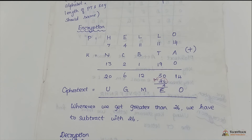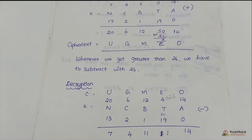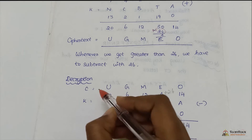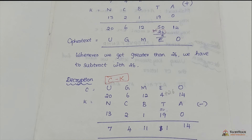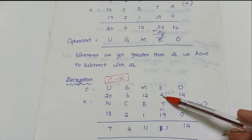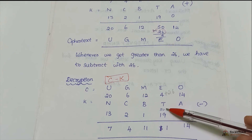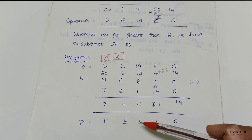For the decryption technique, the formula is: plain text = cipher text minus key. Where the result goes below zero, we add 26. Performing the subtraction gives us 7, 4, 11, 11, 14 — that is H, E, L, L, O — recovering the original plain text 'hello'.